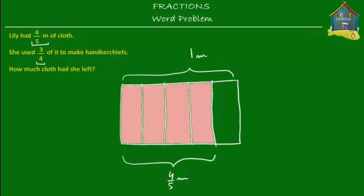Now what she did was she made handkerchiefs using three-fourths of this. So now all that Lily has is she has these four parts. She doesn't have this last part over here, so maybe we can mark it as dotted — just to show that this was the part of cloth that Lily didn't have.